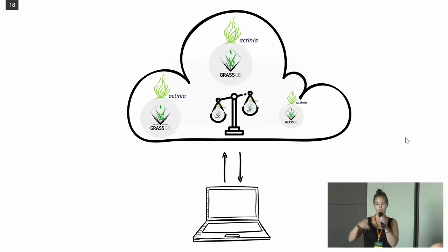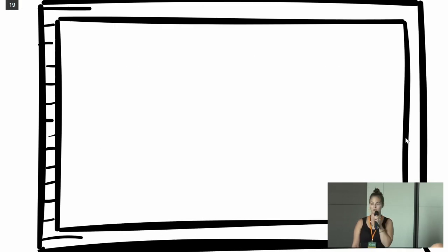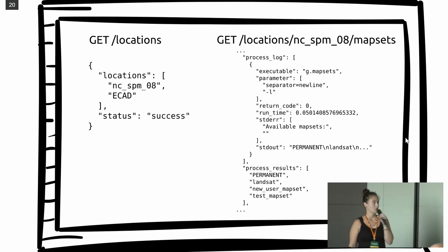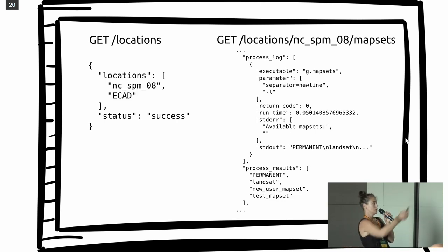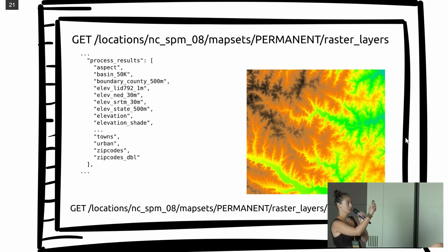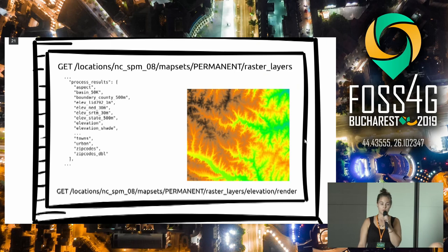The user doesn't need to care which node they're talking to. They just request the system, and a load balancer — depending on which software we use, like Docker Compose or Docker Swarm — routes processing to any of these nodes. As for the actual communication: it's a REST API, and we can request locations. Here's an example response listing available locations in Actinia. Or if you want more detail about what mapsets are in a location, you can request that too. The resources are hierarchically ordered, and inside a mapset like 'permanent' you can list all raster layers and get a result. There are also render functions so you can visualize maps already in the GRASS database.